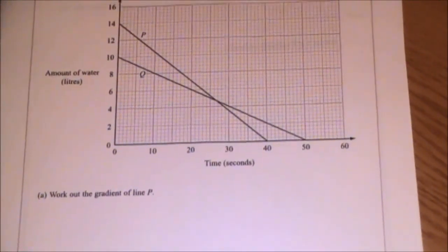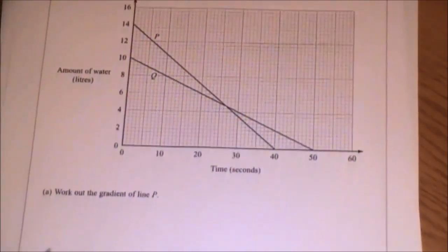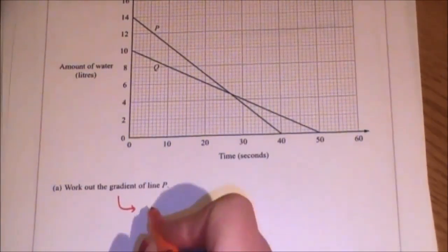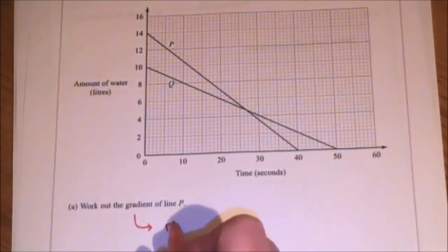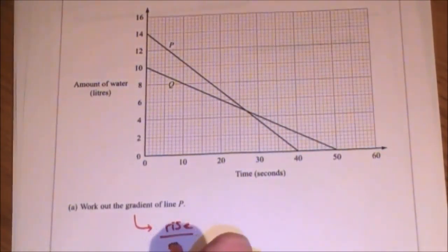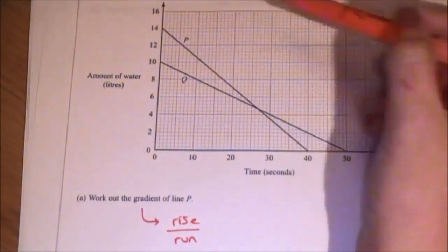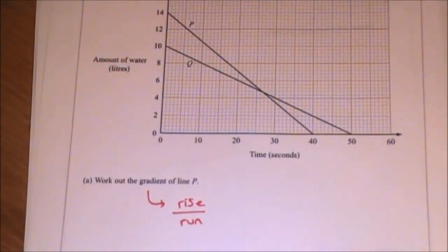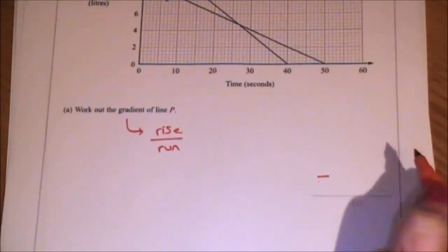Work out the gradient of line P. There's line P. First of all, gradient is another word for the slope of the line. In order to find it, it's the change in the y-axis divided by the change in the x-axis, or the rise over the run. First thing I'm going to notice about line P is the fact that it's a downhill line, so it's going to have a negative gradient. I'm going to put a minus there ready so I don't forget.